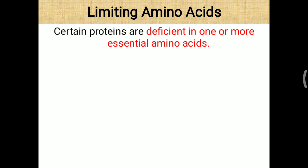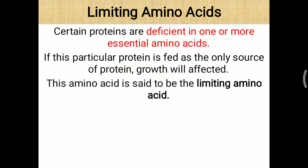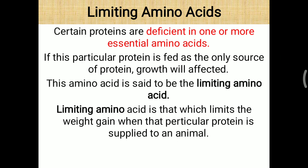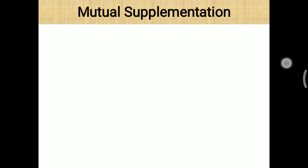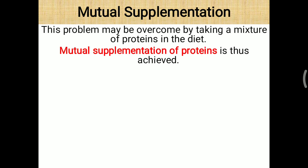Certain proteins are deficient in one or more essential amino acids. If such a protein is fed as the only source of protein, growth will be affected. Any protein taken should be a complete protein containing all essential amino acids. If any essential amino acid is missing, it creates an incomplete protein, and growth will be affected. This missing amino acid is called the limiting amino acid, which limits weight gain. This can be compensated by mutual supplementation of proteins.